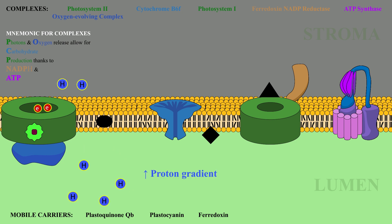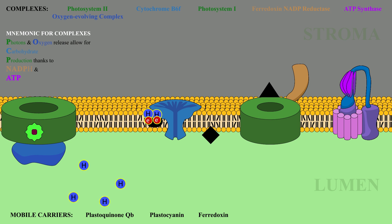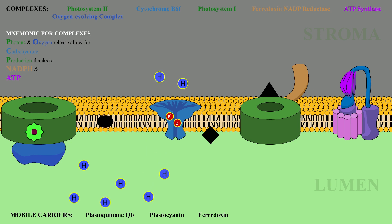The greater the gradient, the more strongly the protons will want to diffuse to the other side. Next, Plastoquinone Qb picks up the two excited electrons from the reaction center chlorophylls in Photosystem II, along with two protons from the stroma, and shuttles them to Cytochrome B6F. Here, the Plastoquinone Qb passes the electrons to the complex and releases the two protons into the lumen. Cytochrome B6F then adds a further two protons into the lumen, further building up the gradient.